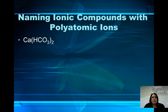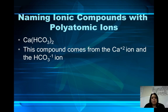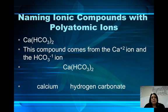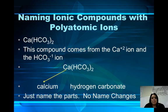I want you to name these compounds using your polyatomic ion chart. Ca(HCO3)2: this compound comes from the Ca plus 2 ion and the HCO3 minus 1 ion. Look up the HCO3 minus 1 ion's name on the chart. You should know that Ca is calcium, and HCO3 is hydrogen carbonate. So the name is calcium hydrogen carbonate. Just name the parts — no name changes.